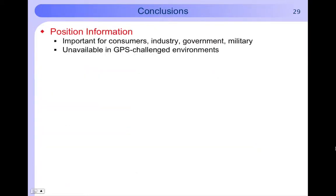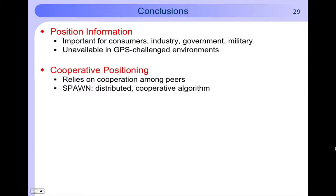In conclusion we found the following. First of all position information is important for a number of applications and our cooperation can provide coverage and accuracy improvements in GPS challenge environments. We've also proposed a powerful distributed cooperative positioning algorithm with proven performance. This algorithm is called SPAWN.